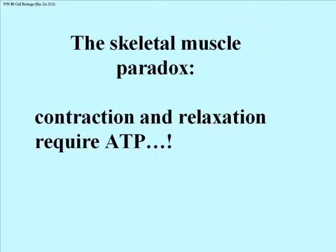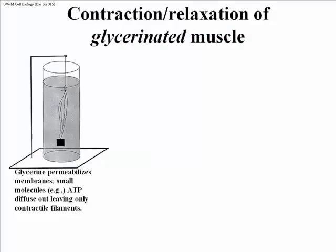Let's talk about the skeletal muscle paradox. Contraction — the shortening of those sarcomeres — as well as relaxation, the pulling apart of those Z-lines and therefore stretching of a muscle, also requires ATP. Let's take a look at some of the early experiments in which this paradox was first identified.